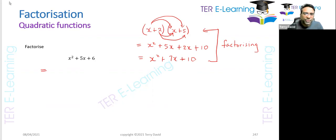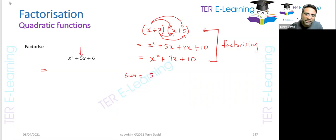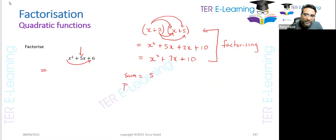But normally, what I do is teach a foolproof method using sum and product. No matter what expression they give you, you'll be able to work it out. We are starting off with x squared plus 5x plus 6. I need to find two numbers whose sum is equal to the coefficient of x, which is plus 5, and whose product is the coefficient of x squared multiplied by my constant — so 1 by 6.